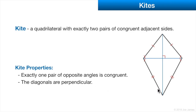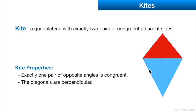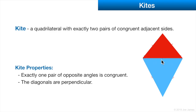The diagonals of a kite are perpendicular — they intersect at a right angle. Those are the only properties of a kite. Since two sides are the same length, we actually have an isosceles triangle in the lower half, and the upper half also forms an isosceles triangle. So a kite consists of a pair of isosceles triangles sharing one side.